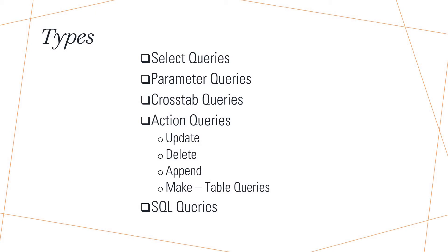Via update query, it applies changes to a single record or a group of records in a table. Delete query is mainly used to delete records from a table. Append query is mainly used to add records from one table to another table. Make table query, as the name indicates, creates a new table from existing tables in the database — mainly used to create a new table from a group or part of data contained in one or more tables.